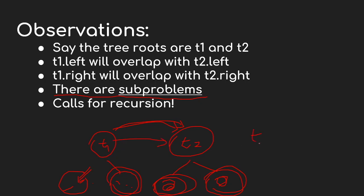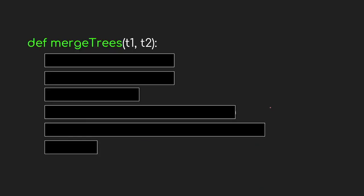We simply add t1 and t2's values and set that as our root node. For the left child we put the answer for t1-left overlapped with t2-left, and for the right child the answer for t1-right overlapped with t2-right. This kind of algorithm clearly calls for recursion. Whenever you encounter a tree problem, ask yourself: if someone provided me with the answers for the left and right children, could I construct the answer for the root? If yes, use recursion.